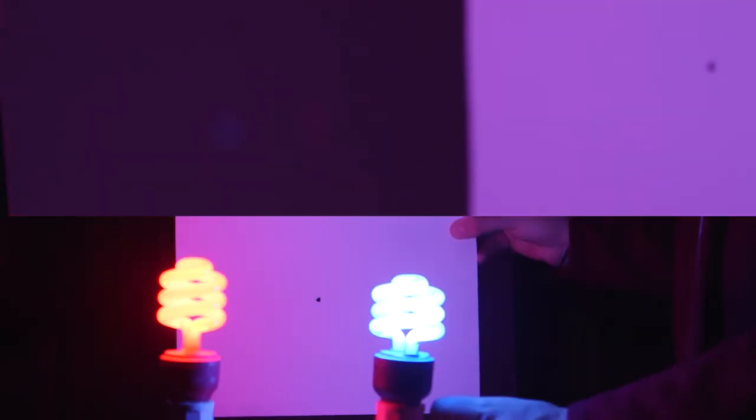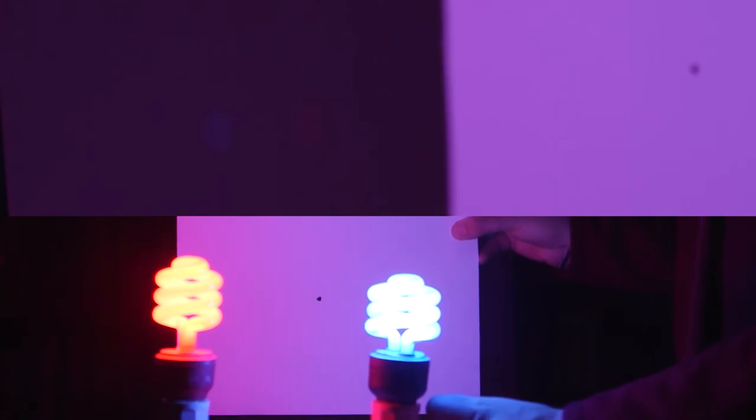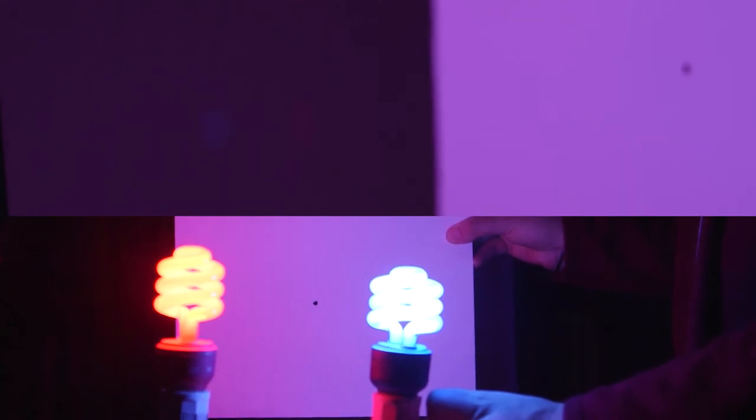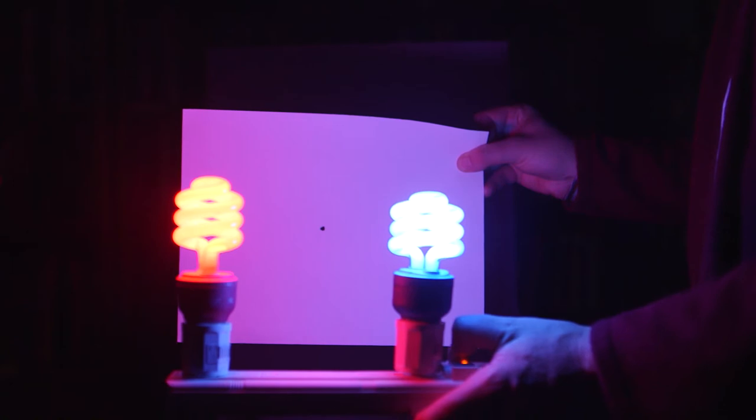You might notice something else. While the red light is on the left side of your screen, the red image is on the right side, and the blue light is also reversed. So our image is right, left, reversed. It's also upside down. If I pick the light up, the image goes down. And if I drop the light down, the image goes up.